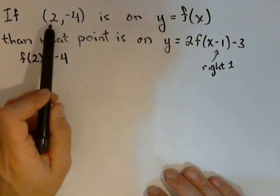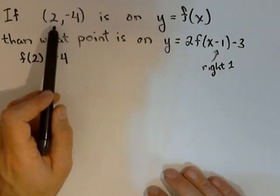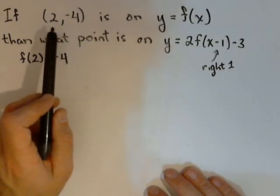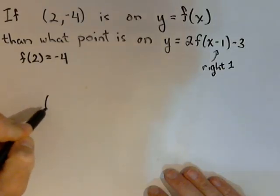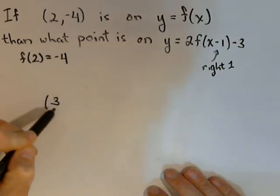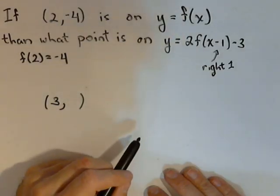What's going to happen to this point is it's going to get moved right 1, which is going to affect the x-coordinate. That's the only thing that's going to affect the x-coordinate. So my new point is going to have an x-coordinate of 3, and then we need to find the y-coordinate.